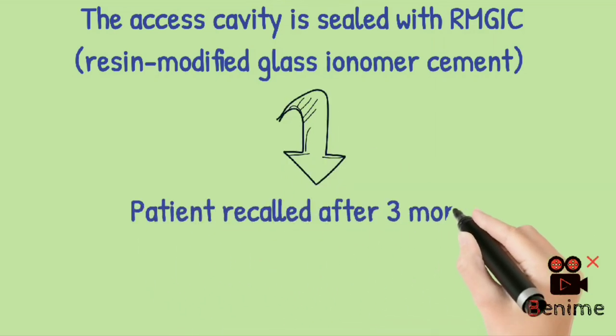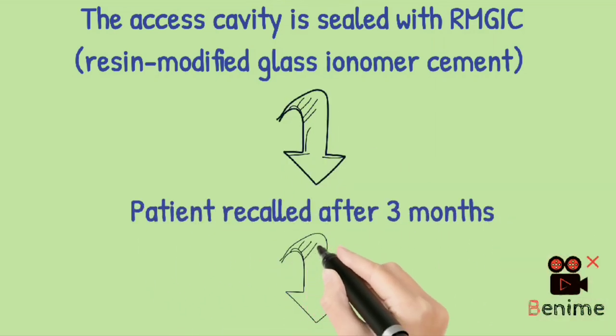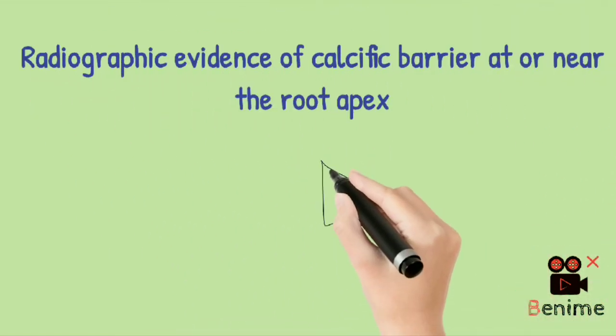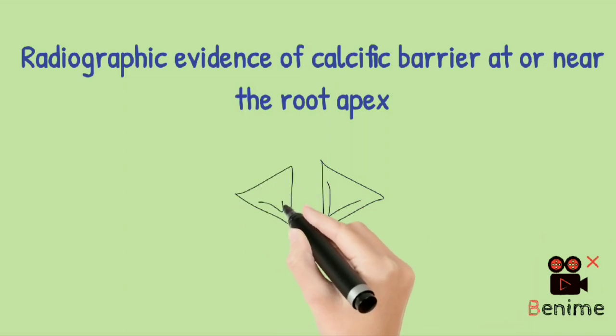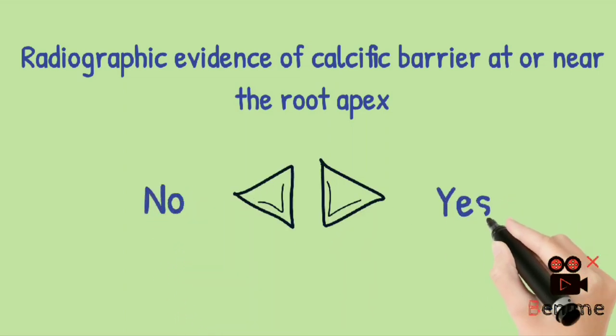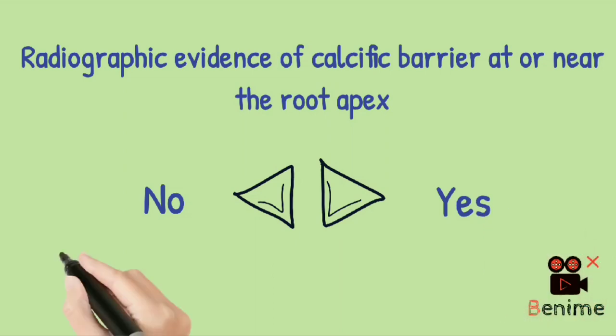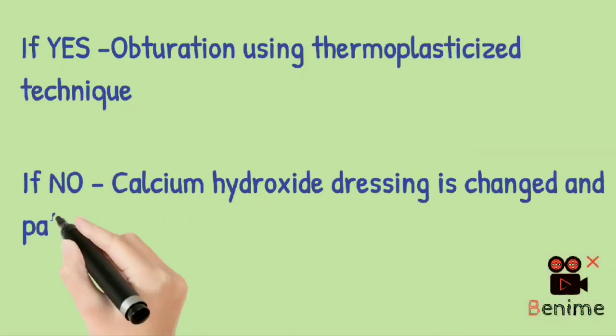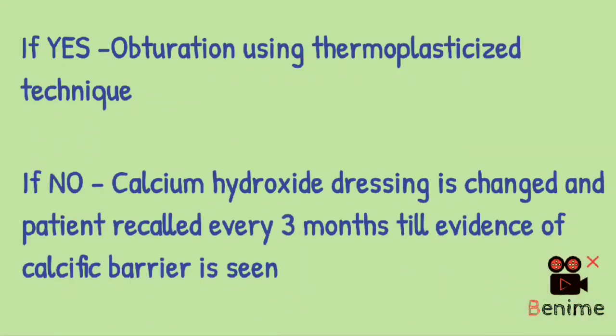Patient is then recalled after 3 months, and radiographic evidence of calcific barrier is checked at or near the root apex of the tooth. Here you can encounter two scenarios: formation of calcific barrier and no formation of calcific barrier. If there is formation of calcific barrier, then obturate using thermoplasticized technique. If no calcific barrier formation, then change the dressing of calcium hydroxide and recall the patient after every 3 months till you create a calcific barrier at the root apex.